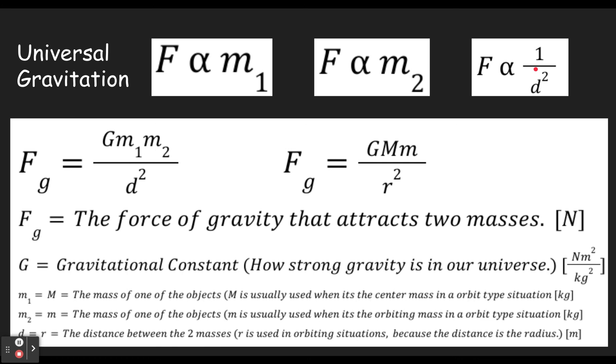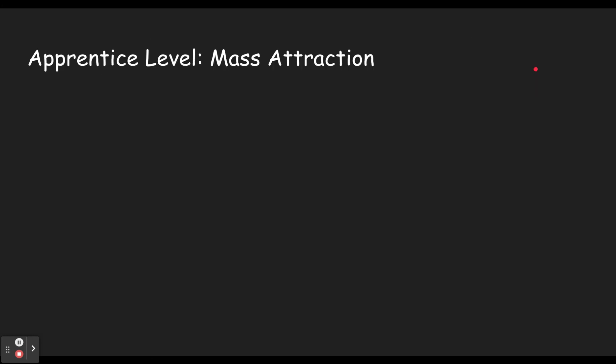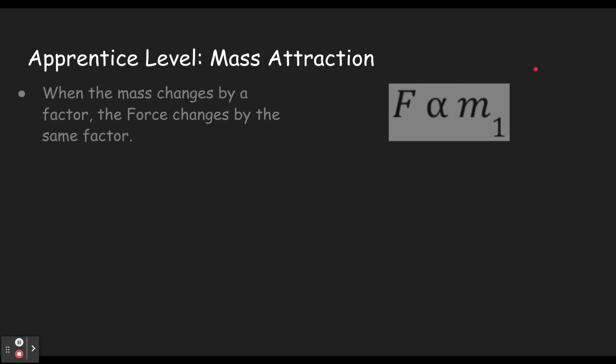If you want just a moment of why that is, if you picture like gravitons which may or may not exist spreading out from an object, they spread out in a sphere kind of like blowing up a balloon. And as you make the radius of the balloon bigger, the surface area of the balloon gets bigger by the square of the radius. You can look up the surface area of a balloon and figure that out, but that has to do with why it happens as best we understand it. Okay, so let's go through a few examples here. In the apprentice level you're only going to deal with the mass changing.